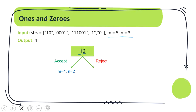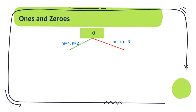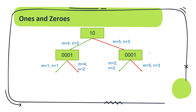If we reject the string, the state stays the same as before. So for each string we have two options. From this state we can explore the next string with those same two options — accepting or rejecting. After accepting or rejecting string one we further explore string two. If we accept both, the state becomes m equals one and n equals one. If we reject both, the zeros and ones stay the same.